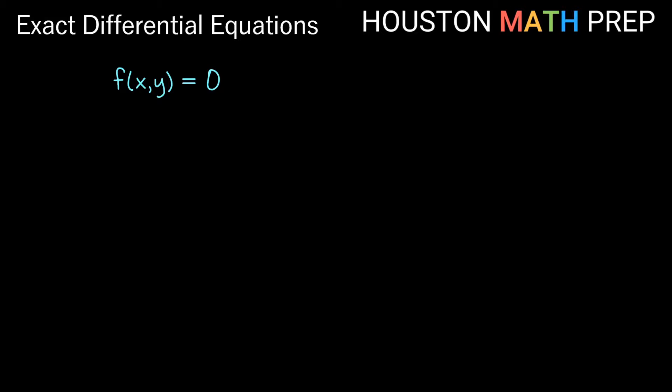If you haven't had a course in multivariable calculus, like a Calculus 3 course, that's okay. You'll still be able to follow along with what we do to solve these, but the first part might be a little bit foreign to you. In multivariable calculus, if we had a function of x and y equal to zero, and we wanted to take the derivative of that function with respect to x, then we actually need to use the chain rule.